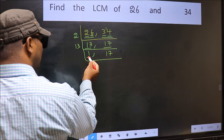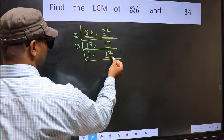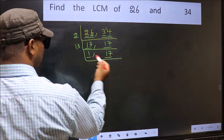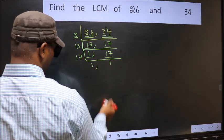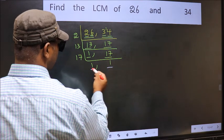Now we got 1 here. So focus on the other number 17. 17 is a prime number so 17 times 1 is 17. So we got 1 in both the places.